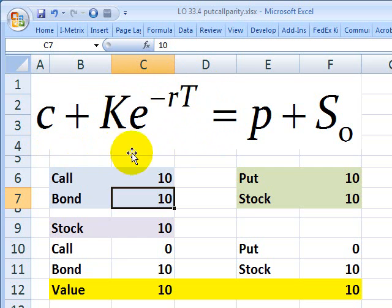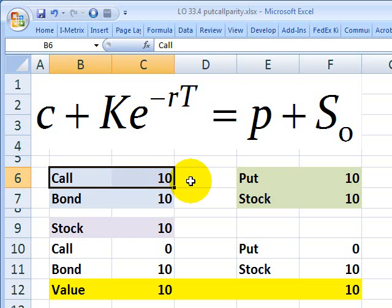To recap, we have our two portfolios on the left, a portfolio consisting of a call option, a European-style call option with a strike price of $10, and we have the present value of cash or a bond with a face value of $10. That means it's going to be worth $10 at the end of the period and something less than $10 today.